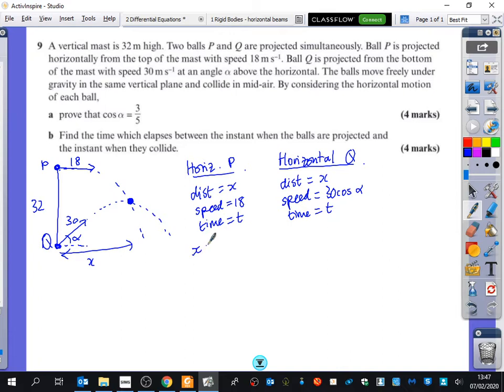We could say that distance equals speed times time. And here, distance equals speed times time. Well, these two distances are equal to each other. It's simultaneous. So we get 18t equals 30 cos alpha multiplied by t. Cancel the t's and divide by 30, which is the same as 3 over 5. And that tells you that cos alpha is 3 over 5.